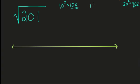So let's try in between. How about 15? Well, 15 squared is 225.